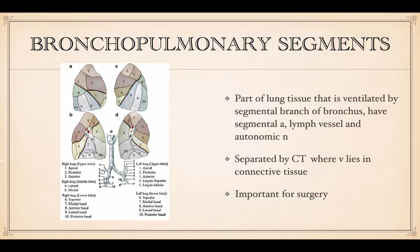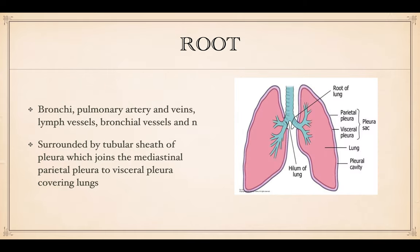These are the lung segments, all supplied by segmental arteries along with the lymph vessels and autonomic nerves, and they're separated by connective tissue where the veins lie. As you can see, there are all the segments. This is important for surgery.